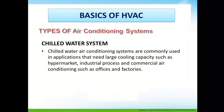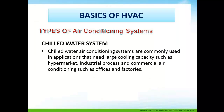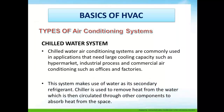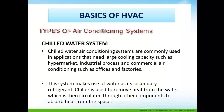Chilled water system: chiller air conditioning systems are commonly used in applications that need large cooling capacities, such as hypermarkets, industries, process cooling, and commercial air conditioning such as offices and factories. This system makes use of water as its secondary refrigerant. A chiller is used to remove the heat from the water, which is then circulated through other components to absorb heat from the space.